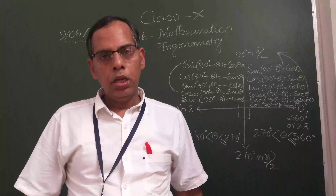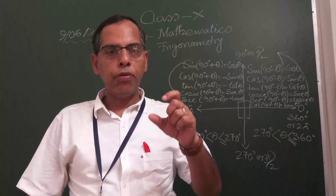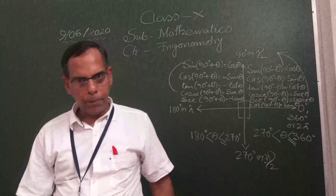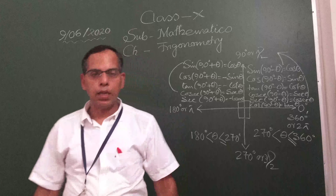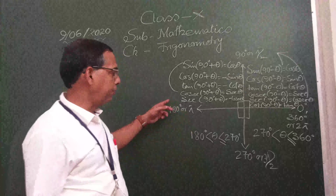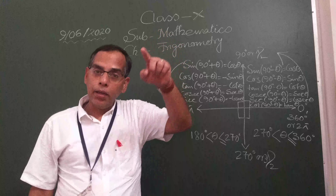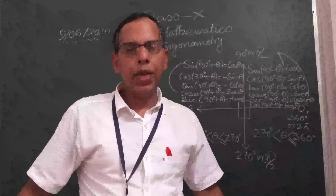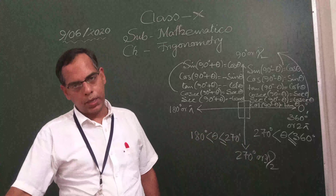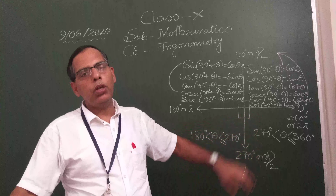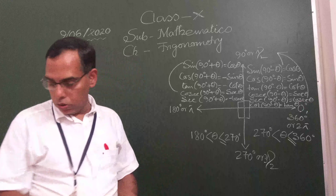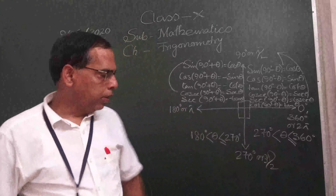Continuing: tan(90° + θ) = -cot θ; cosec(90° + θ) = sec θ; sec(90° + θ) = -cosec θ; cot(90° + θ) = -tan θ. So the sign depends on which ratio you are converting. If converting sine it will be positive, but if converting cos it will be negative. These are the 6 transformations for 90° - θ and 6 for 90° + θ.